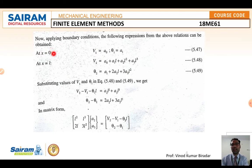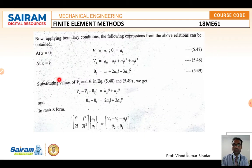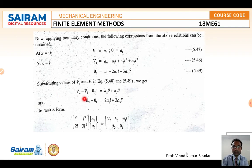Substituting the values of v₁ and theta₁ into the above equations yields: v₂ - v₁ - theta₁·L = a₂L² + a₃L³, and theta₂ - theta₁ = 2a₂L + 3a₃L². Writing these two equations in matrix form separates the generalized coordinates a₂ and a₃ on one side and the nodal quantities (v₂ - v₁ - theta₁L) and (theta₂ - theta₁) on the other.